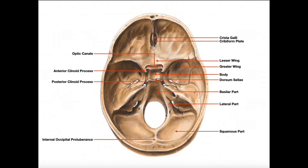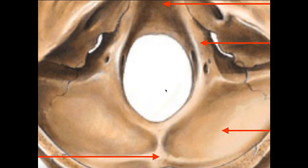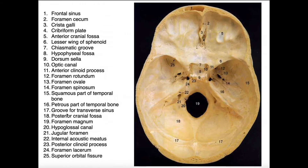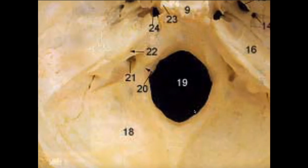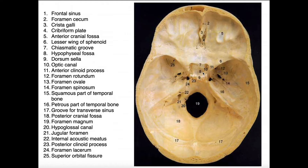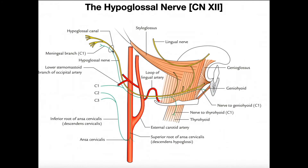The hypoglossal canal is located in the walls of the foramen magnum — the large hole at the base of the skull. If you zoom in, you can see a hole on either side of the foramen magnum walls; those two holes are the hypoglossal canals. In another labeled image of an actual skull, number 19 is the foramen magnum and the hypoglossal canals are the small foramina on either side of its wall — that's where the hypoglossal nerves exit the cranium inferiorly.